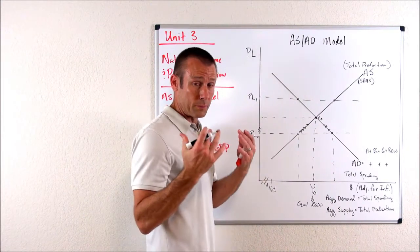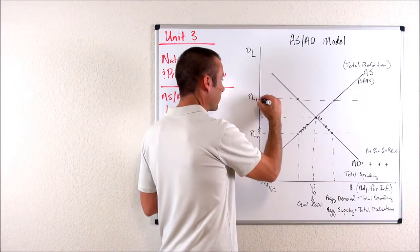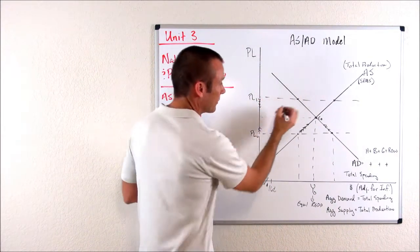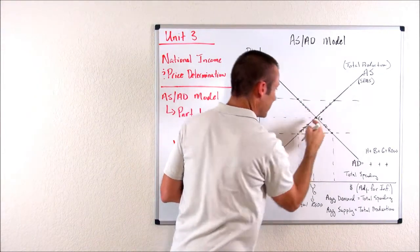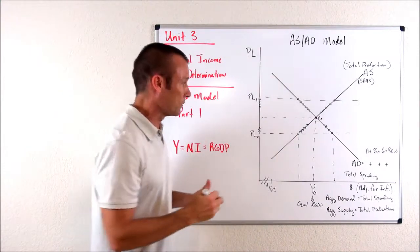Inventories would begin to go up, prices would go down, and as prices went down, our total spending would increase, and our total production would decrease, and we would converge right there to that equilibrium.